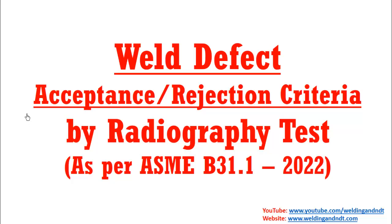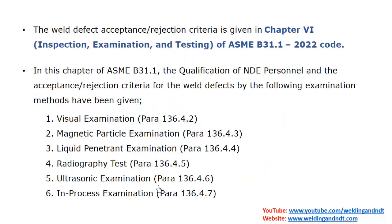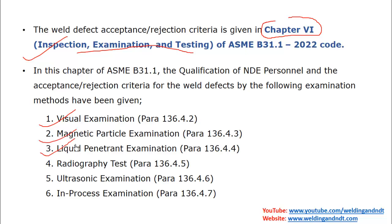Hello friends, welcome to my channel. Today's topic is about acceptance or rejection criteria of weld defects by radiographic test, as per ASME B31.1 Power Piping Code. In ASME B31.1, Chapter 6 is dedicated to inspection, examination, and testing. This chapter covers all acceptance criteria: visual examination, magnetic particle examination, DPT, radiographic test, ultrasonic examination, and in-process examination.